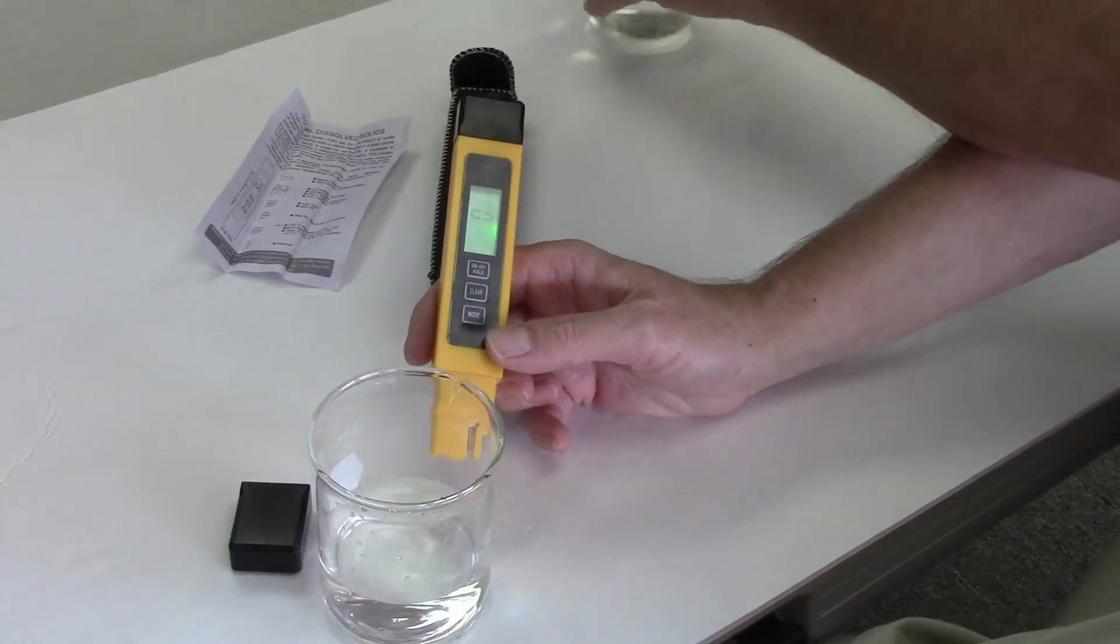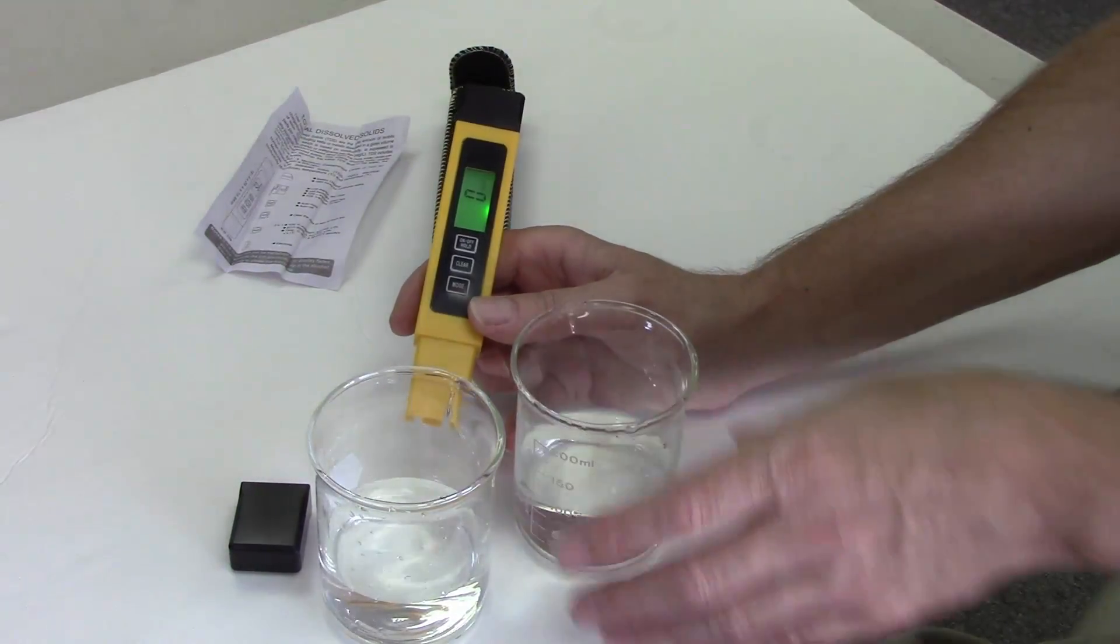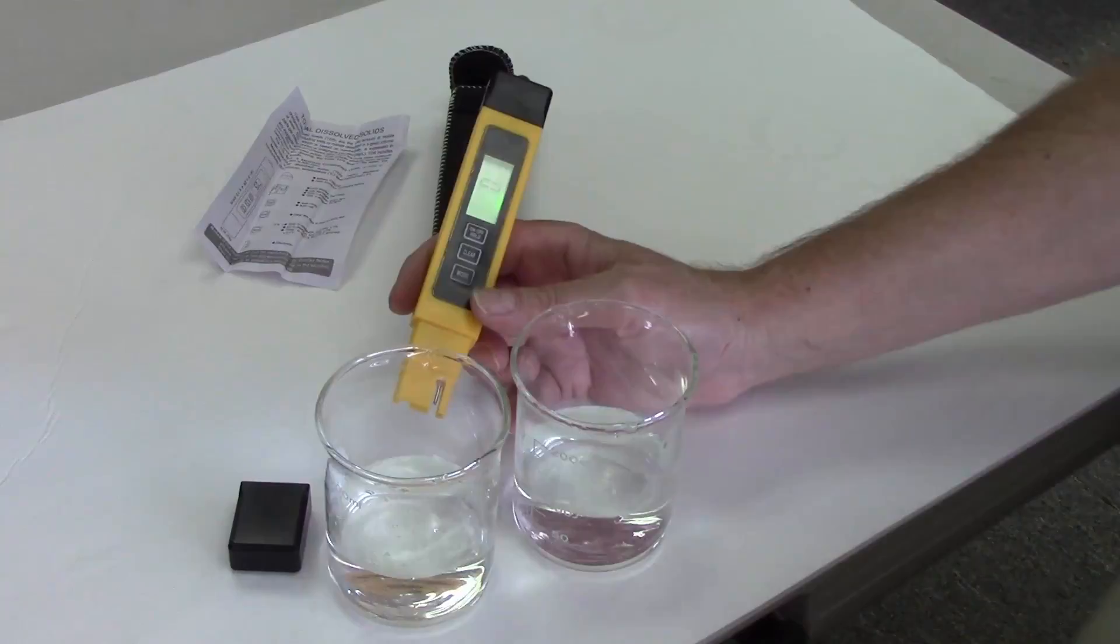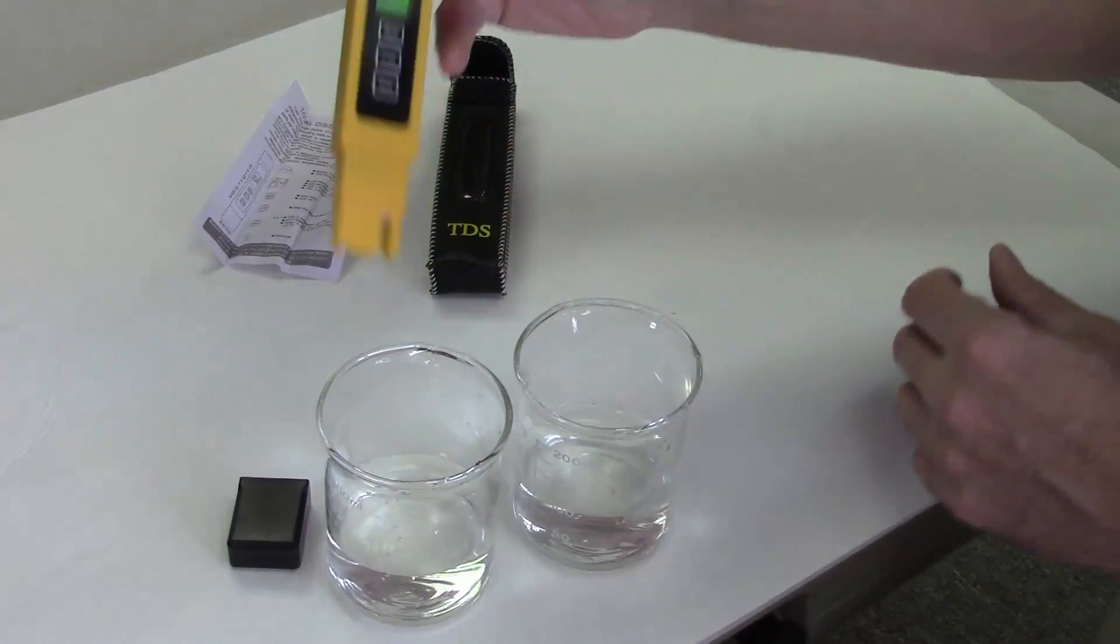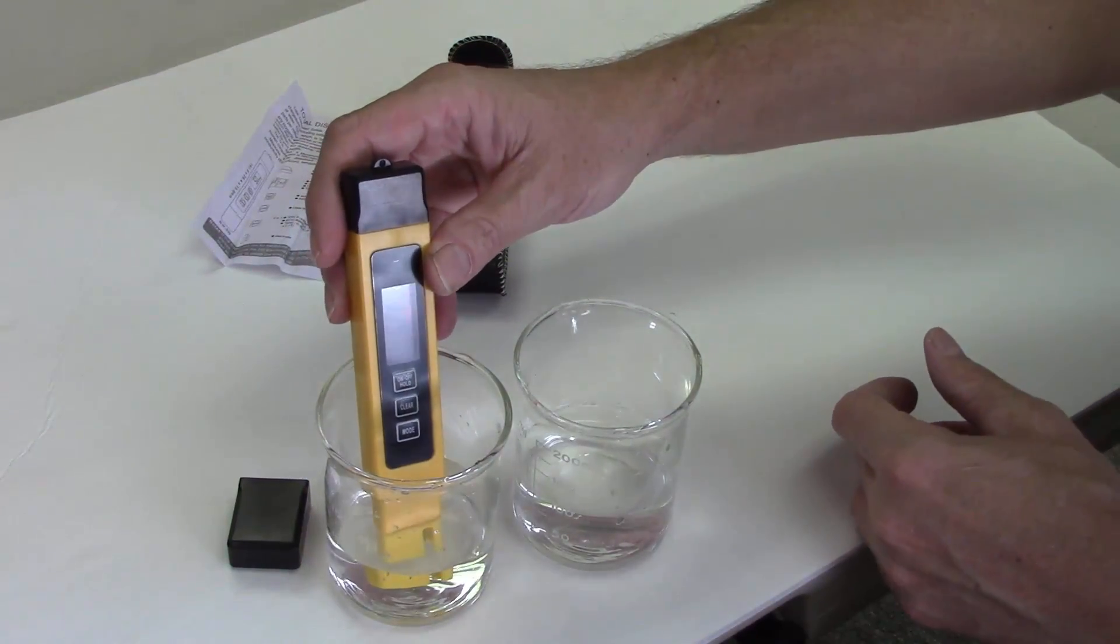Now I have two samples of water here. One is city water and one is reverse osmosis water. So one of them is going to ding out real hard and have a lot of TDS in it, and the other one is not.